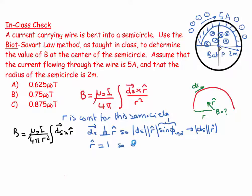So ds, r̂, sine φ is equal to ds times 1, which equals ds.